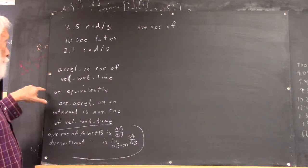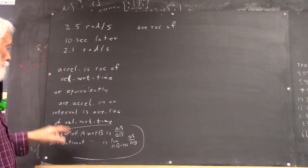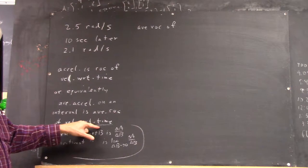And you might even make a mistake on this. Or equivalently, you could say the average acceleration on an interval is the average rate of change of velocity with respect to time.